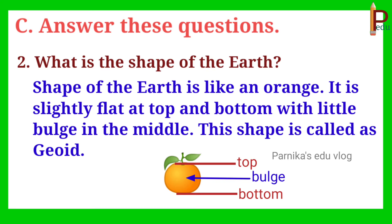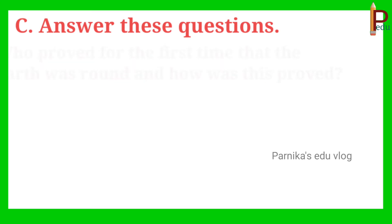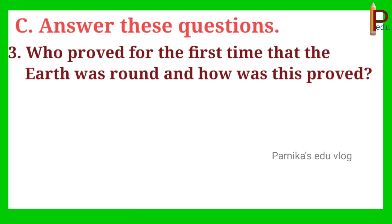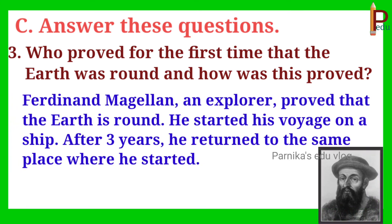This shape is called a geode. Third: who proved for the first time that the earth was round, and how was this proved? Answer: Ferdinand Magellan, an explorer, proved that the earth is round. He started his voyage on a ship, and after three years he returned to the same place where he started.